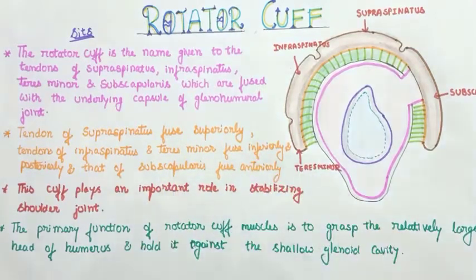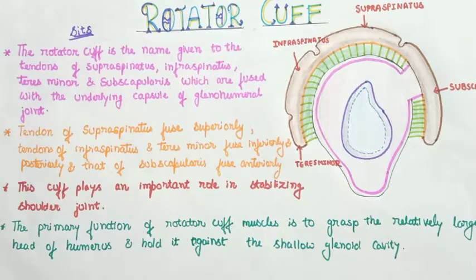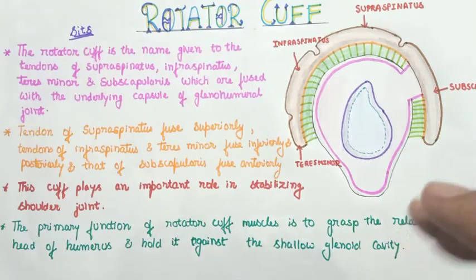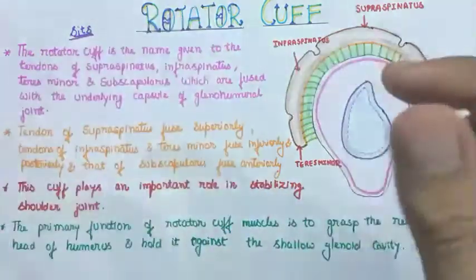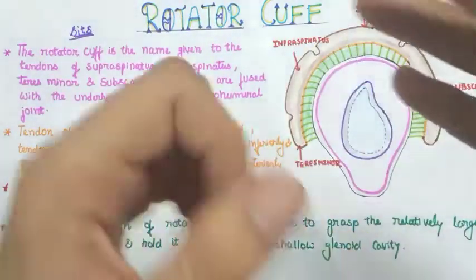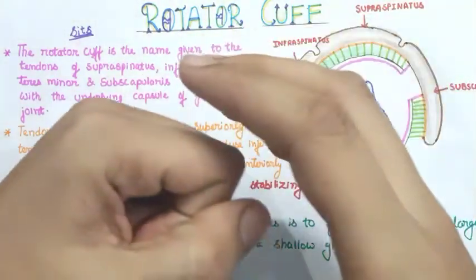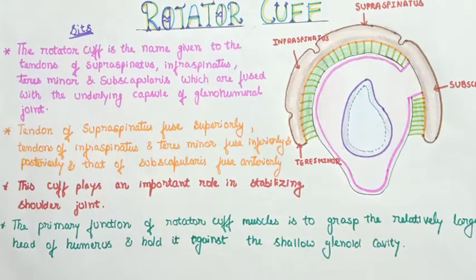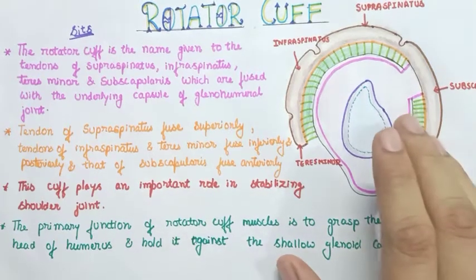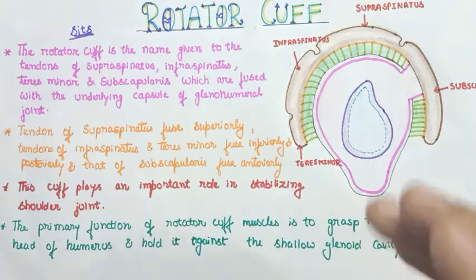Now let's move on to the third and fourth points, which tell us about the importance of the rotator cuff. The rotator cuff plays an important role in stabilizing the shoulder joint because the huge head of the humerus has to fit into a very small glenoid cavity. This cuff acts as a cushion and a strong stabilizing support for the joint. The primary function of the rotator cuff muscles is to grasp the relatively large head of the humerus and hold it against the shallow glenoid cavity — adapted from Vishram Singh. These four points are just enough to describe the rotator cuff.